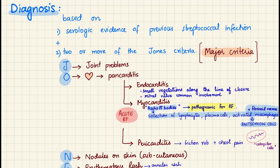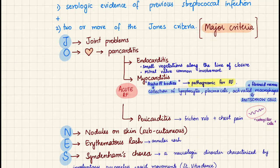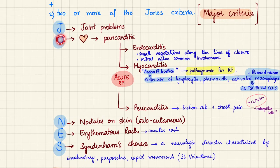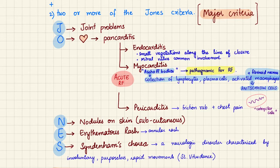The Jones criteria are the major criteria. Using the mnemonic JONES: J stands for joint problems; O represents the heart, standing for pancarditis with the whole heart inflamed and subcutaneous nodules on the skin; E is for erythematous rash; and S is for Sydenham's chorea, a neurologic disorder characterized by involuntary, purposeless, and rapid movements, also known as St. Vitus' Dance.